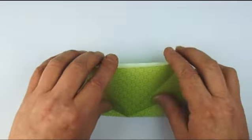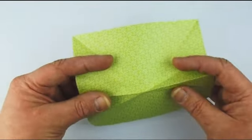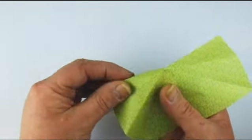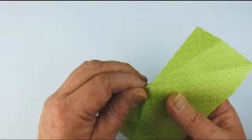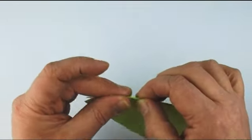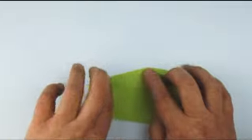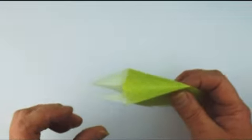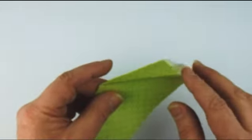And we're going to make reverse folds using those creases we've just made. So pinch through, flatten in the centre. So the paper is reversed inside. We're going to do the same on the other side.